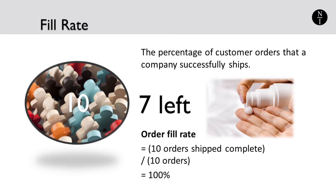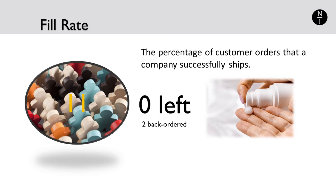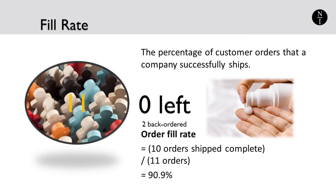Now suppose customer number 11 comes along and orders 9 bottles of this lotion. You have 7 left in stock after fulfilling the orders of the first 10 customers. You ship those 7 to customer number 11 and the remaining 2 bottles are placed on the backorder list to show that you still owe that customer 2 bottles. The order fill rate is now 10 orders shipped complete divided by a total of 11 orders, or 90.9%.